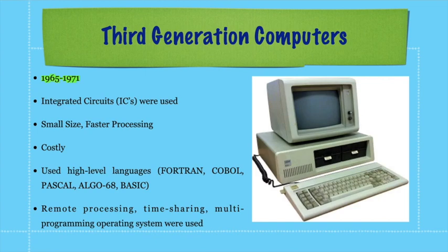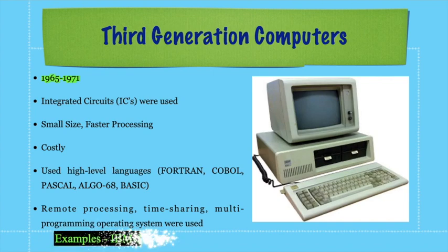In terms of memory for third generation computers, it began with magnetic core memory and then semiconductor devices were used for making memories. If a question asks which memory was used in third generation computers, the answer is: initially magnetic core, then semiconductor. Multi-programming and multi-user systems were introduced in this generation, along with virtual memory, which was also introduced in third generation computers.